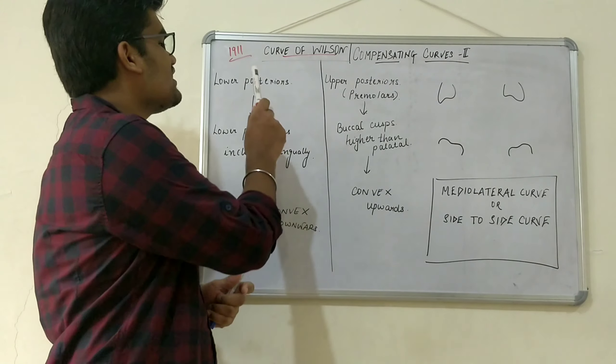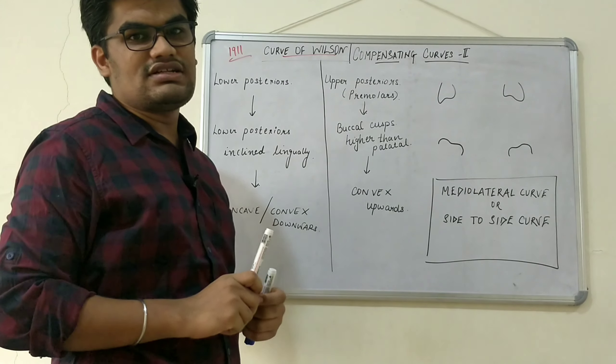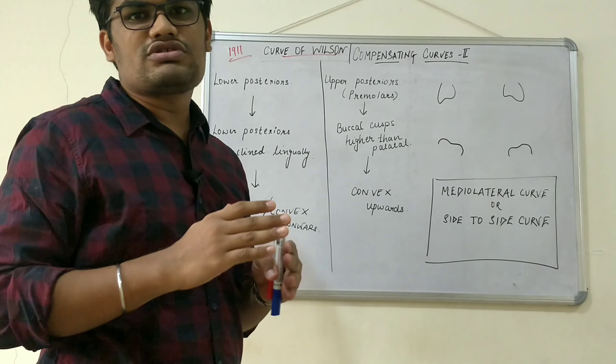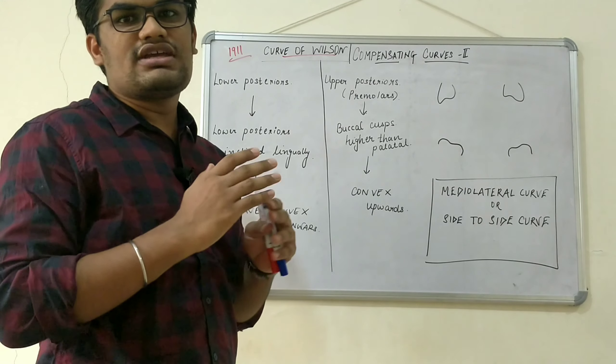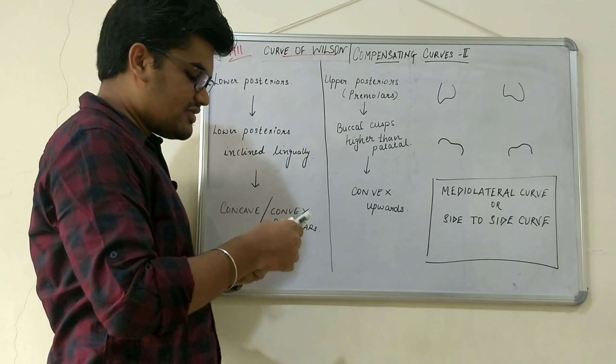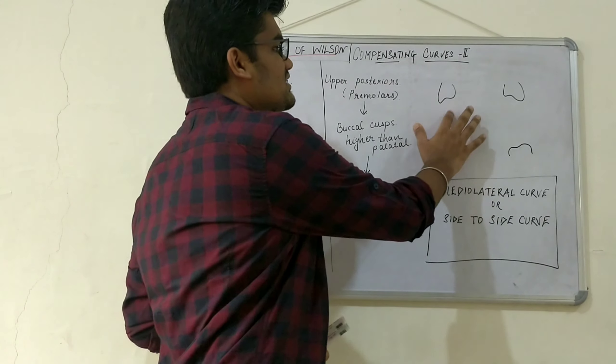Curve of Wilson was given in the year 1911 by George Wilson. He was searching for something to avoid the posterior teeth interferences, so he gave the concept of curve of Wilson. What is that concept? We will see the figure.